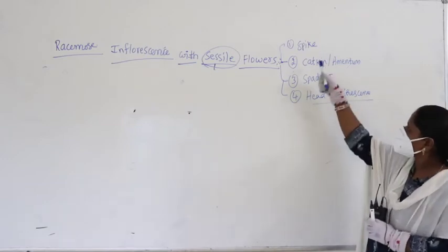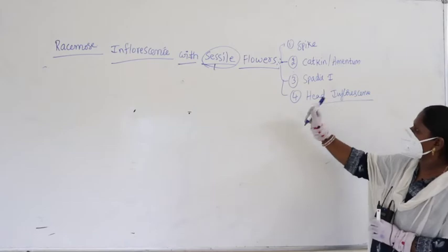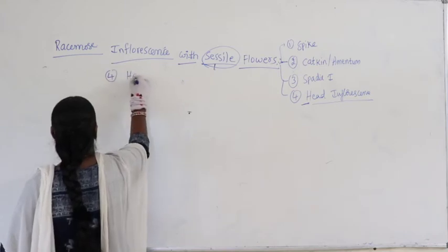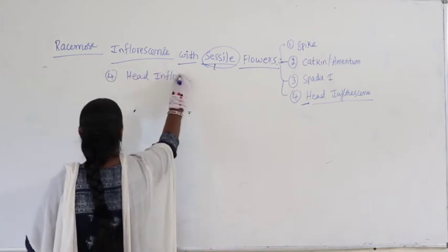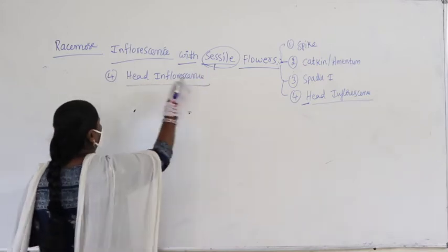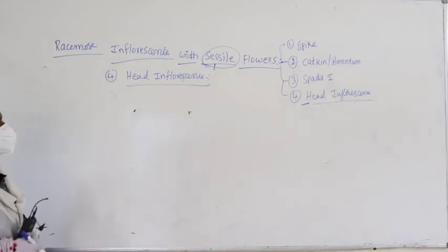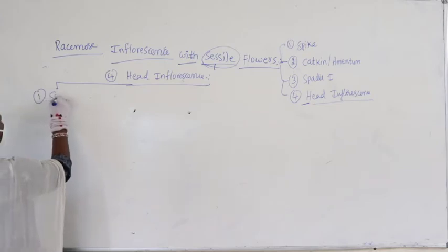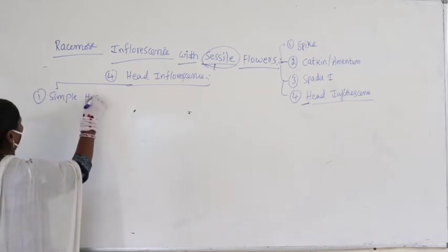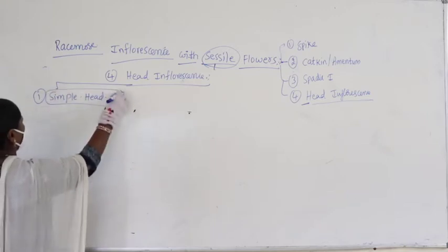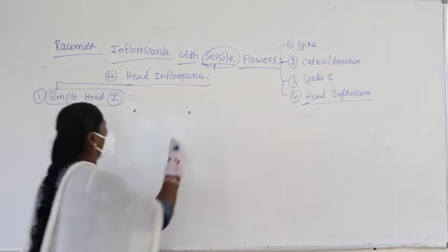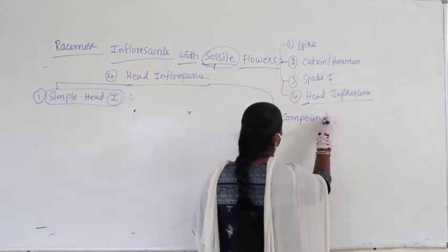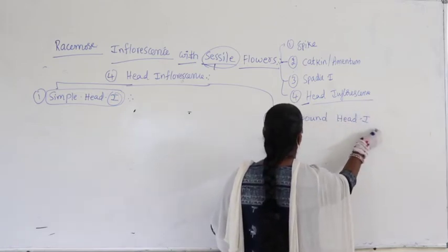We have completed all three categories — spike, catkin, spadix — and let us come back to head inflorescence. Head inflorescence has a good concept to refer. Let me classify it as usual into simple head inflorescence and compound head inflorescence.